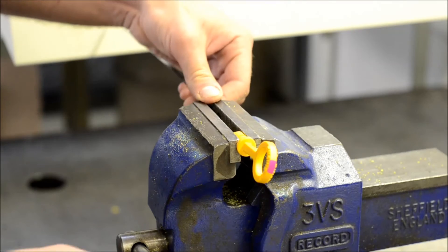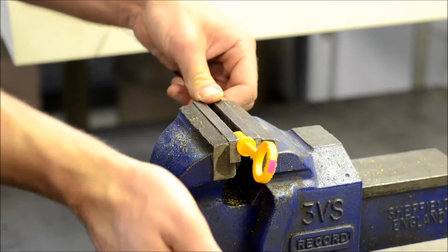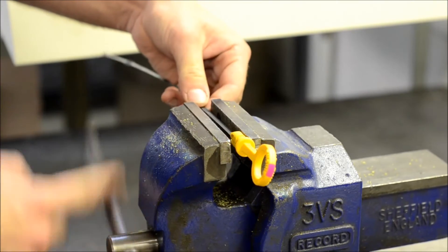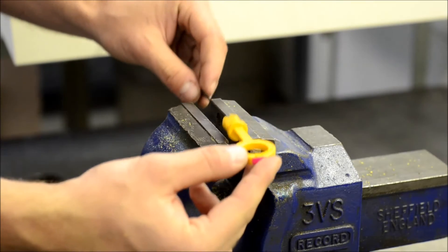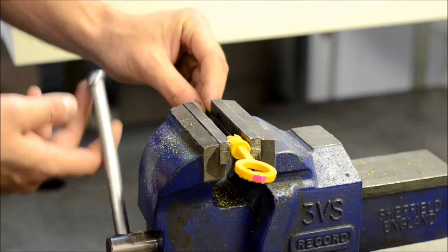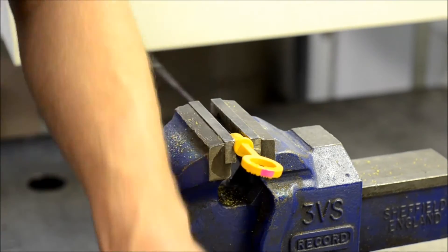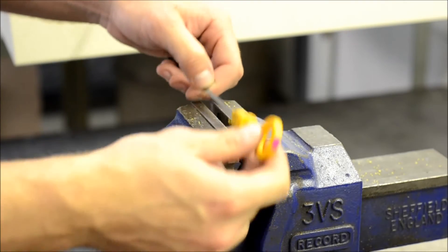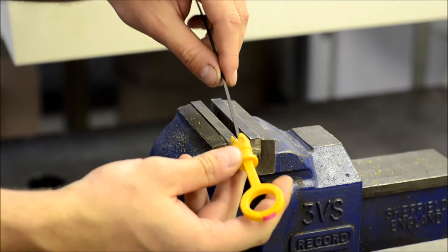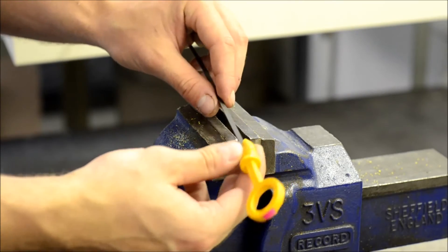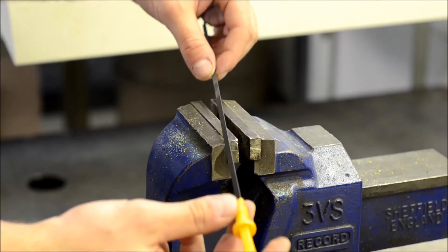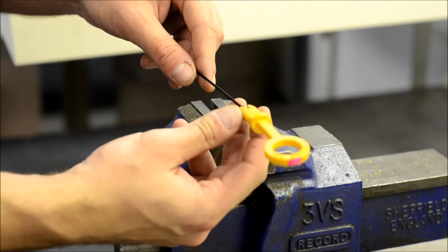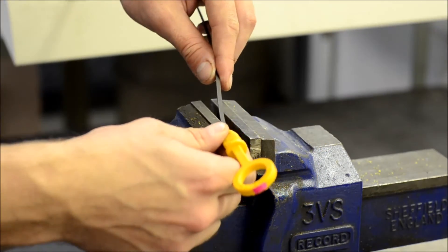Once you have the vise closed as far as possible, release it, turn it 90 degrees, and repeat the process. Repeat this process as many times as it takes for the plastic to come apart from the dipstick shaft. We are pinching it from both sides to break apart the plastic.